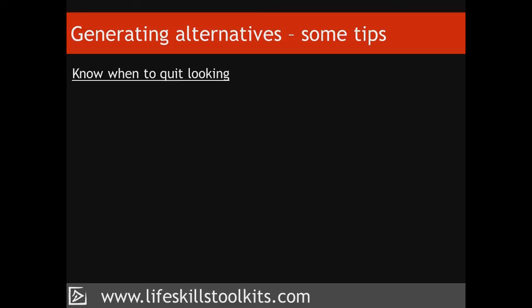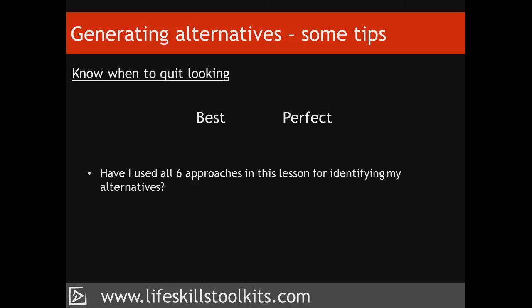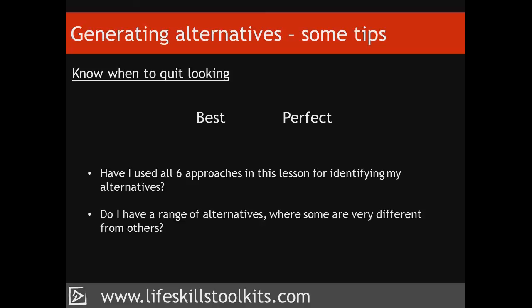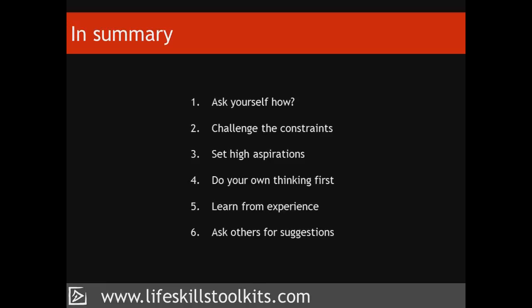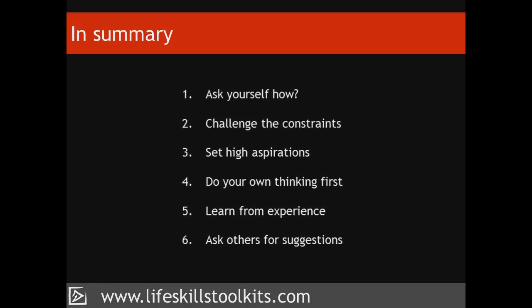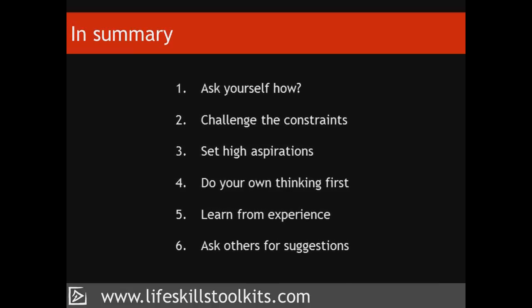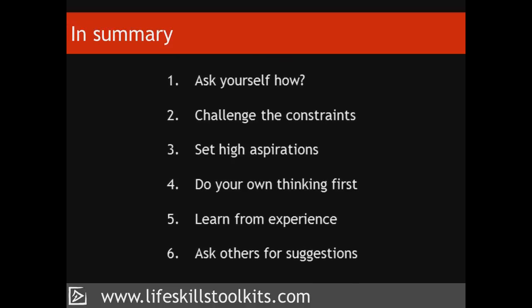Three: know when to quit looking. It's one thing to search for the best solution, and another to search for a perfect one. At some point you have to stop and move on to the next step in the PROACT process: consequences. You'll know you're done when you answer yes to one or more of these questions: Have I used all six approaches for identifying alternatives? Do I have a range of alternatives where some differ from others? Would I be satisfied with one of my alternatives as a final decision? Since a decision is only as good as the best alternative you can identify, it pays to use all six approaches.